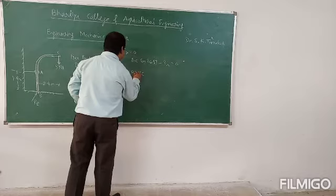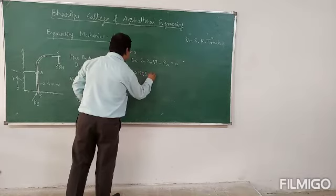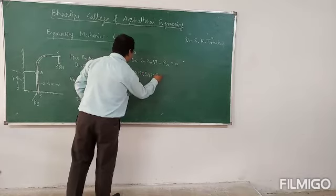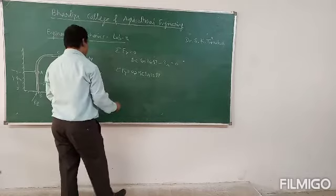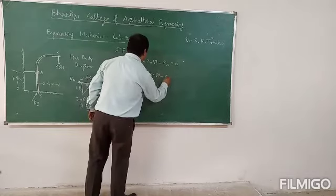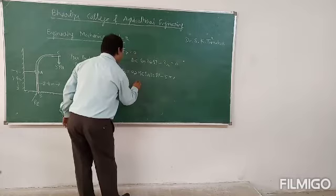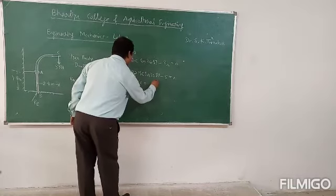RB sine 36.87 minus 5 equals 0, so the value of RB equals 5 divided by sine 36.87, so RB equals 8.36 kN. This comes 8.36 kN, this is the reaction at point B.